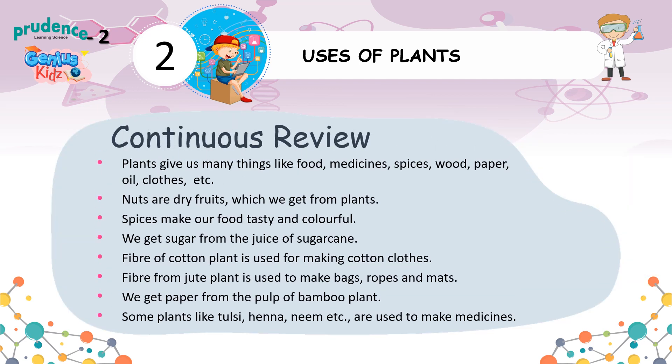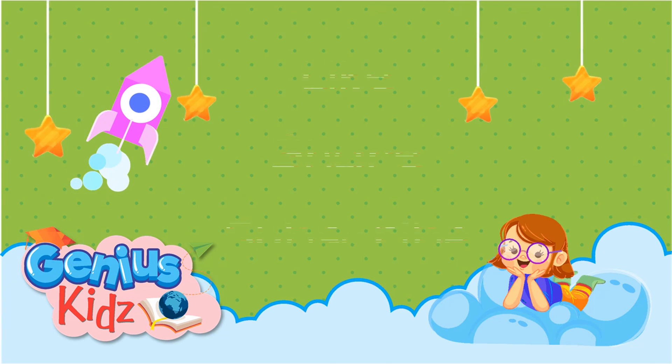Plants give us many things like food, medicines, spices, wood, paper, oil, clothes, etc. Nuts are dry fruits which we get from plants. Spices make our food tasty and colorful. We get sugar from the juice of sugarcane. Fiber of cotton plant is used for making cotton clothes. Fiber from jute plant is used to make bags, ropes, and mats. We get paper from the pulp of bamboo plant. Some plants like tulsi, henna, neem, etc. are used to make medicines.